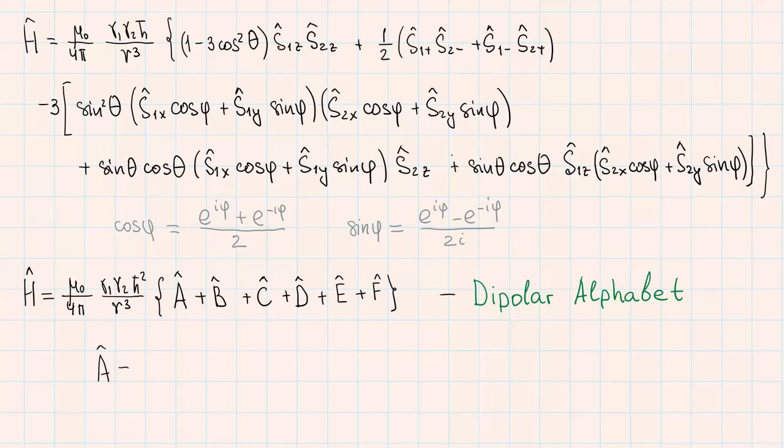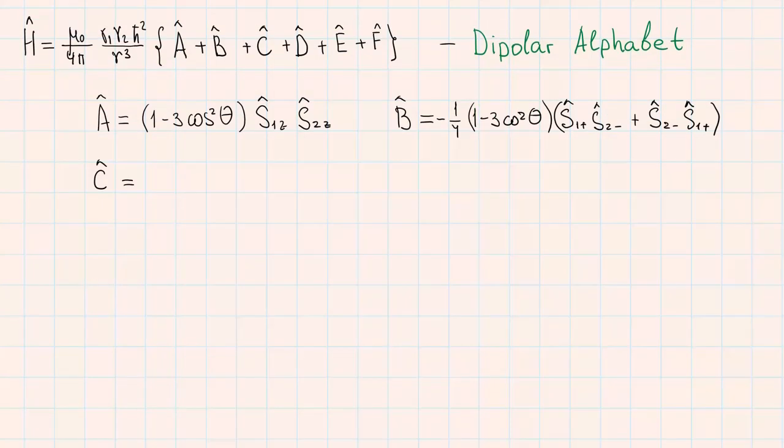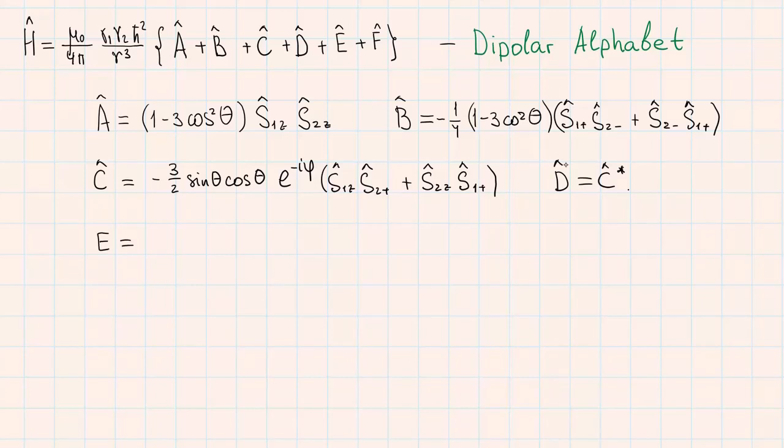The term A we know already. It is proportional to the product of S1z and S2z. The term B is characterized by its independence on the angle phi. The term C is proportional to the exponent of minus iφ. The term E is proportional to the exponent of minus 2iφ. And the term F is the complex conjugated term E.